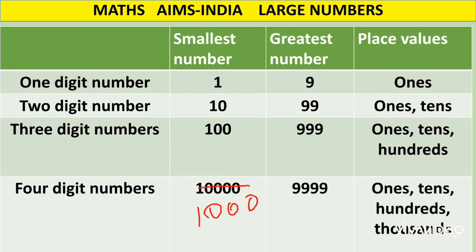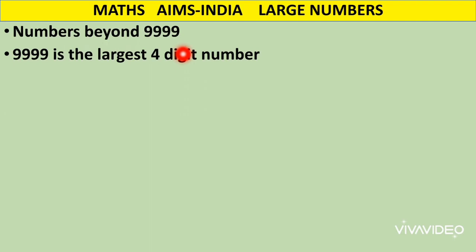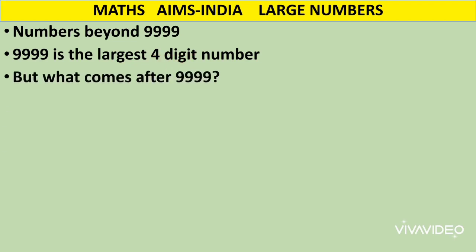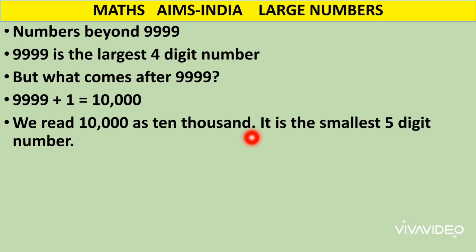This was just a quick revision of what you have learnt in third class — we learnt till four digit numbers. In today's class, we learn about numbers beyond 9999. What is 9999? It is the largest four digit number. If we add one to it, we get a five digit number. What did we get? The number 10,000, which is the smallest five digit number.